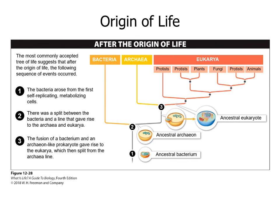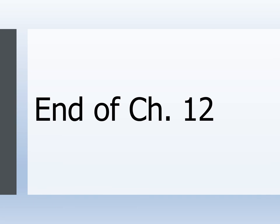On the origin of life tree, bacteria arose from the first self-replicating metabolizing cells. There was then a split between bacteria and a line that gave rise to archaea and eukarya, meaning archaea and eukarya arose from a common ancestor with bacteria. The fusion of a bacterium and an archaean-like prokaryote gave rise to the eukarya, which then split from the archaea line. We can see these common ancestors at various points in time, which are major history events that led to the rise of protists, plants, fungi, animals, and ultimately us. That is the end of Chapter 12.